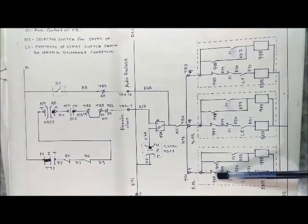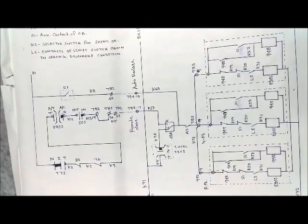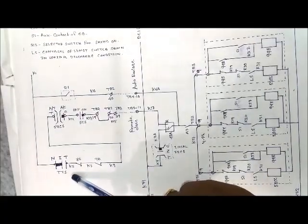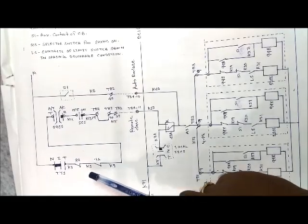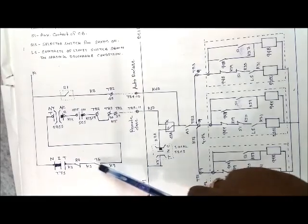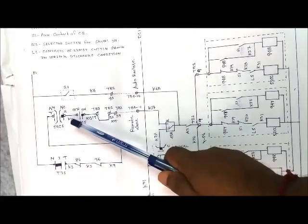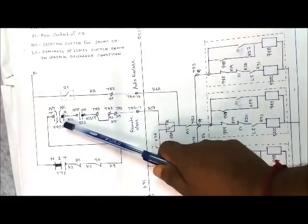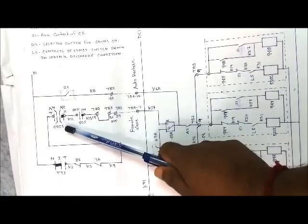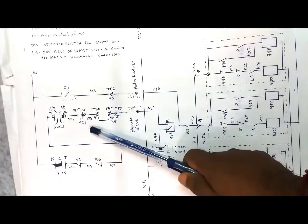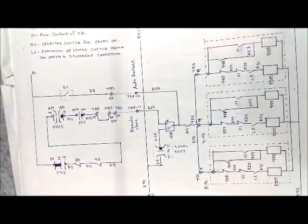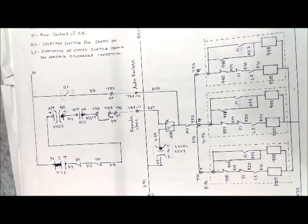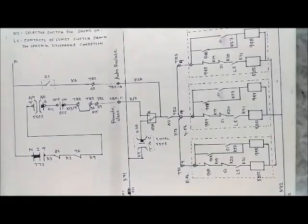In the control and relay panel portion, TTS is the trip transfer switch. In series with the TTS switch there are NC contacts of the 86 and 96 relay, and in series there is the closing control switch located at the control and relay panel. SCS is the selector switch for synchronizing — it must be in the ON condition. Contact 21 is for automatic closing from the distance relay.